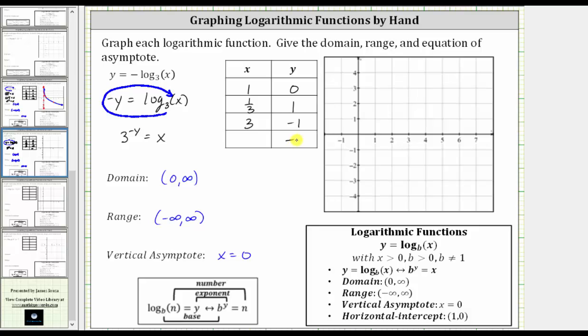And if y is equal to negative two, the exponent is the opposite of negative two or positive two, x is equal to three squared, which is equal to nine.